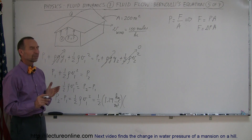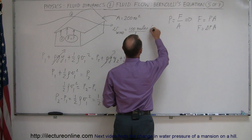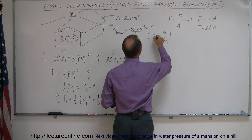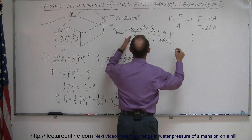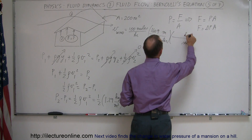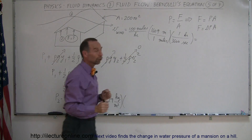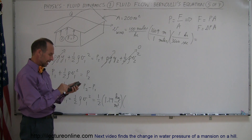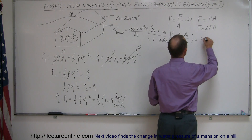The pressure difference equals ½ times the density of air, about 1.29 kg/m³, times the velocity squared. The velocity was given in miles per hour, so we convert to meters per second: 100 miles/hr × 1,609 m/mile ÷ 3,600 s/hr gives us 44.7 meters per second.